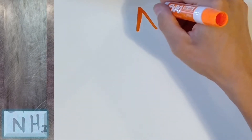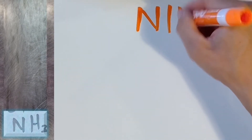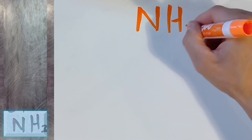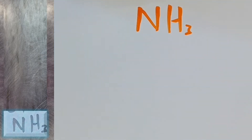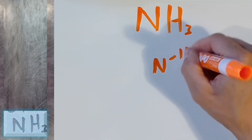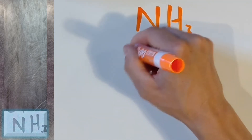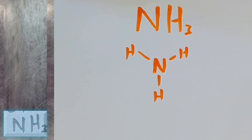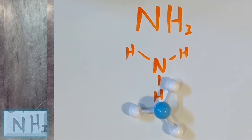Let's look at ammonia. Its molecular formula is NH3. Ammonia has one nitrogen atom and three hydrogen atoms. Here is its molecular structure. The nitrogen atom sits at the center, with the three hydrogen atoms bonded to it, each with one bond.